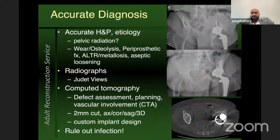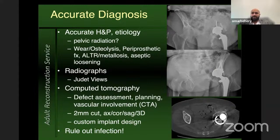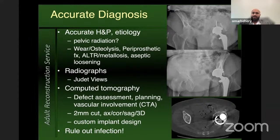It's important to arrive at an accurate diagnosis. It starts with a thorough history and physical exam, understanding the etiology of the discontinuity. Is this a wear and osteolysis case? A periprosthetic fracture with an acute discontinuity? Due to adverse local tissue reaction from metallosis or tapered corrosion? Or aseptic loosening of an acetabular component ignored for years? Important history elements include any pelvic or abdominal cancers requiring pelvic radiation — such as endometrial or colon cancer — how much radiation they received, and whether it included the whole pelvis. This information may not always be readily available, but it's very important to understand if radiation is involved so you understand the bone biology you're dealing with.